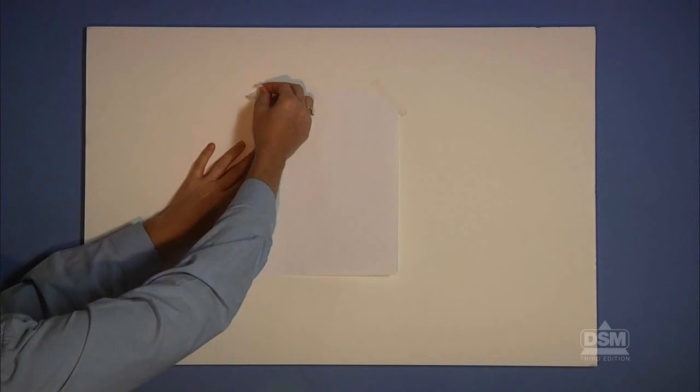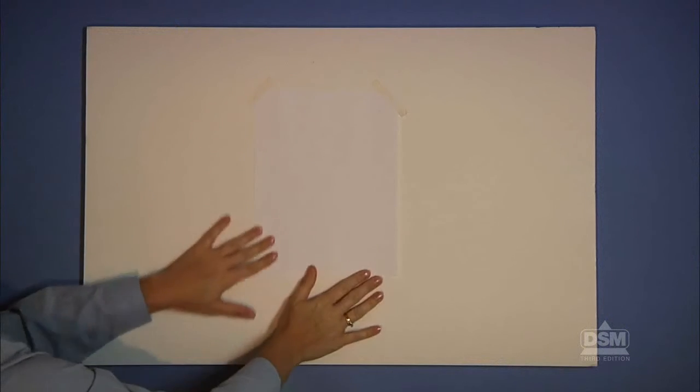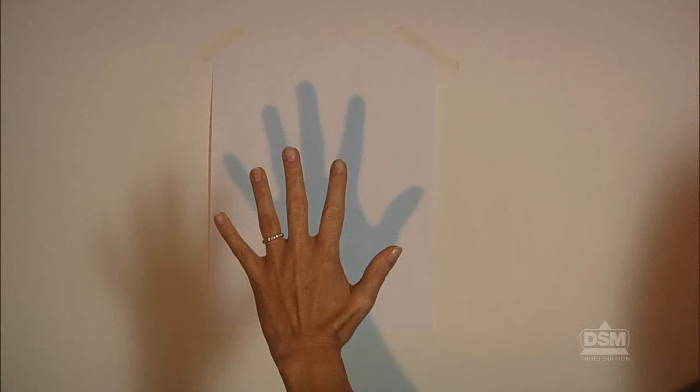Instruct one student to turn on the light and tell the other to tape a sheet of construction paper onto the wall in the area where the light is shining. Then, have the same student hold his or her arm about 10 centimeters away from the paper so that a shadow of the hand and wrist falls on the paper. Instruct these students to spread their fingers and adjust their hands so the shadow clearly shows a hand.